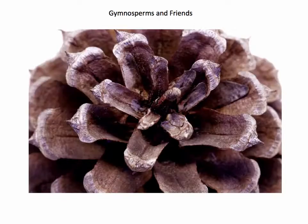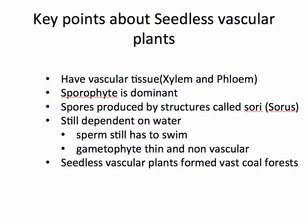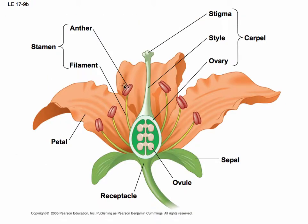Let's look at the parts of the flower and how that fits into the life cycle. First of all, in the parts of the flower, we have what's called the stamens, which have what are called anthers and filaments. The anthers are important because that's where spores are produced that develop into the so-called male gametophytes, which are essentially what we call pollen.